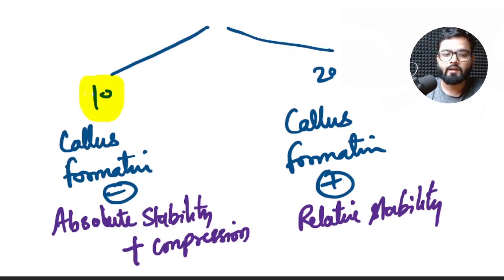Primary bone healing is where there is no callus formation and it occurs when there is absolute stability at the fracture site and there is compression at the fracture site. That means there is no movement at the fracture site which results in this type of healing.